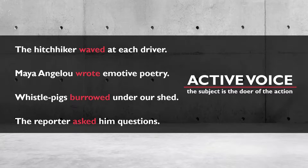What are the actions in these sentences? The verbs: waved, wrote, burrowed, and asked. Who is performing the action of the verbs? The hitchhiker, Maya Angelou, whistlepigs, and the reporter. Each of these sentences is an example of active voice because the subject is the doer of the action. Notice that a sentence does not need to have an object to be an example of active voice — the important thing is that the subject is performing the action of the verb.